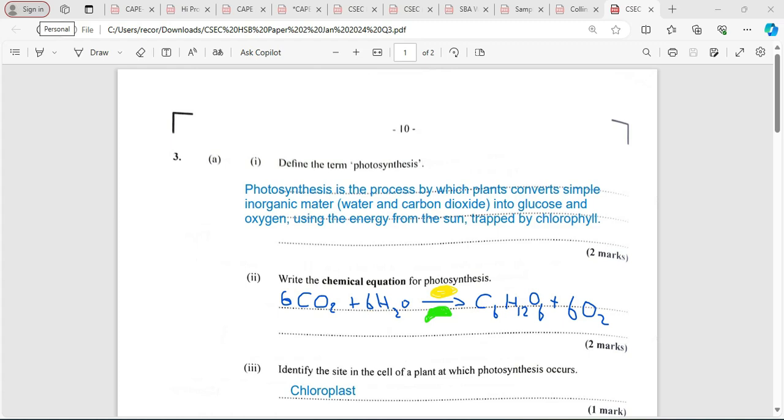Secondly, it wants us to write a chemical equation for photosynthesis. This is not in the old textbook because it's required from the new syllabus. The equation is 6CO2 + 6H2O, with the condition being sunlight trapped by chlorophyll, producing C6H12O6 + 6O2.